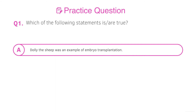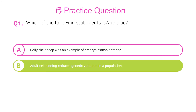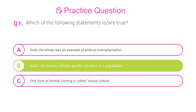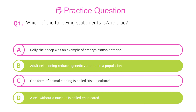Let's go through the answers. A — Dolly the sheep was an example of embryo transplantation. This is false. Dolly the sheep was actually an example of adult cell cloning, which is different from embryo transplantation, so make sure you understand the difference between these two processes. B — Adult cell cloning reduces genetic variation in the population. This is true — that's one of its disadvantages. C — One form of animal cloning is called tissue culture. This is false; tissue culture is an example of plant cloning. D — A cell without a nucleus is called enucleated. This is true.